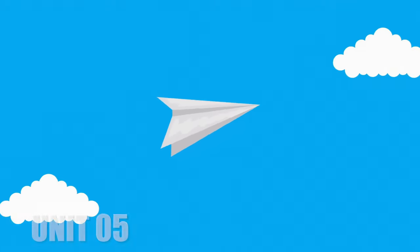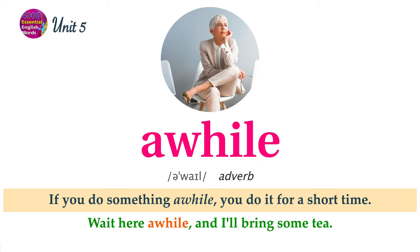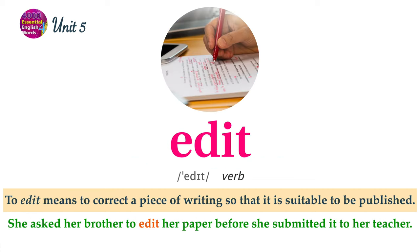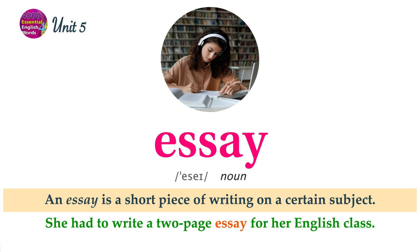Unit 5 Word List. If you do something a while, you do it for a short time. Wait here a while, and I'll bring some tea. Cyberspace is the imaginary place of the internet where activities occur. I didn't receive your email. It probably got lost in cyberspace. To edit means to correct a piece of writing so that it is suitable to be published. She asked her brother to edit her paper before she submitted it to her teacher. An essay is a short piece of writing on a certain subject. She had to write a two-page essay for her English class.